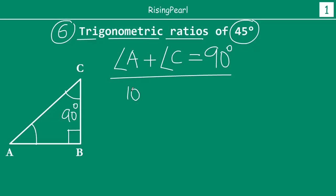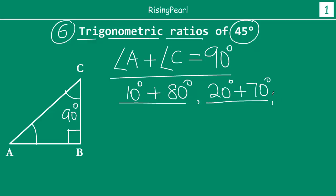Just take some examples. I can draw angle A as 10 and angle C as 80 and I will have a right angle triangle. I can draw angle A as 20 and angle C as 70 and I will have a right angle triangle. I can do angle A as 30 and angle C as 60 and I will have another right triangle. So the point I am trying to make is that there are literally infinite number of ways in which we can draw a right triangle.